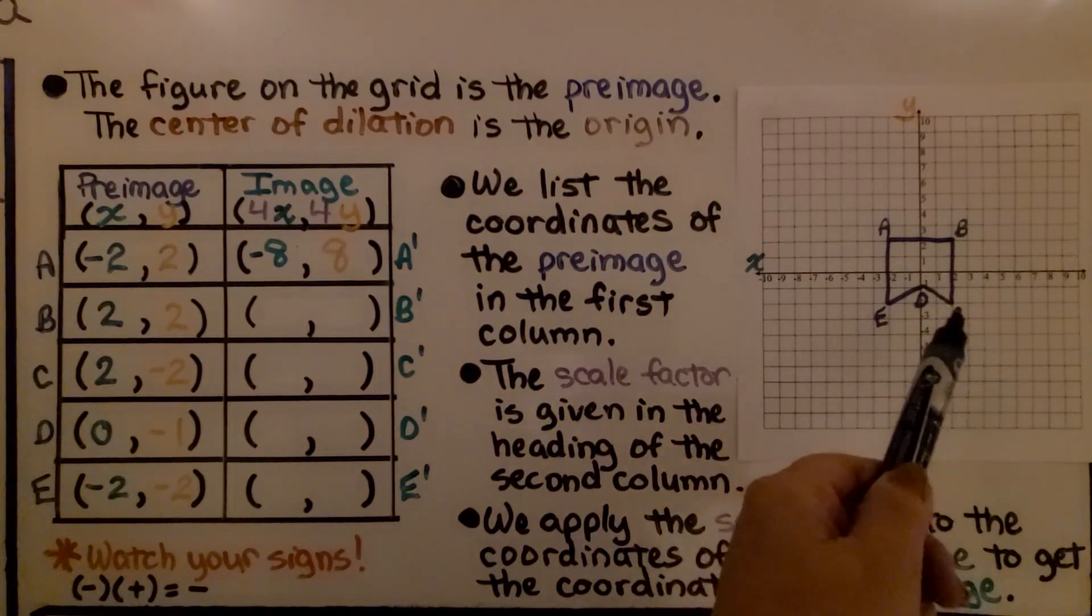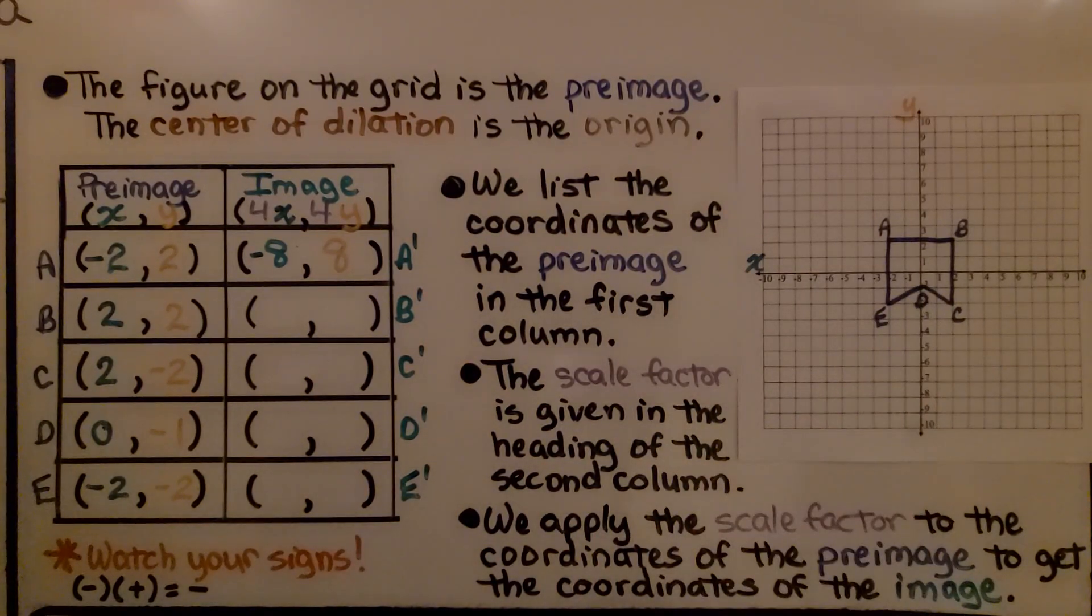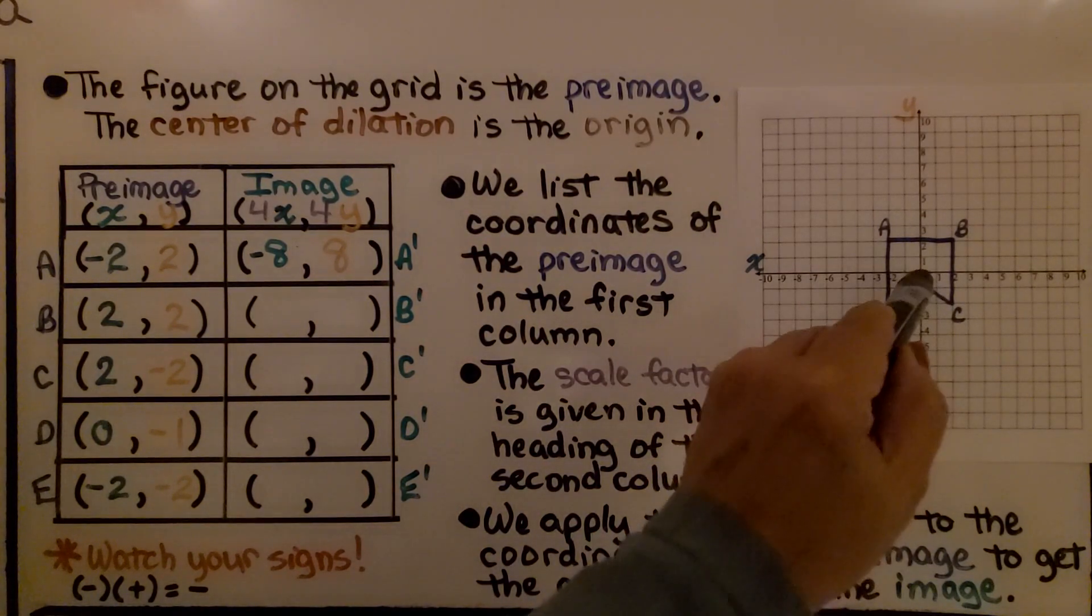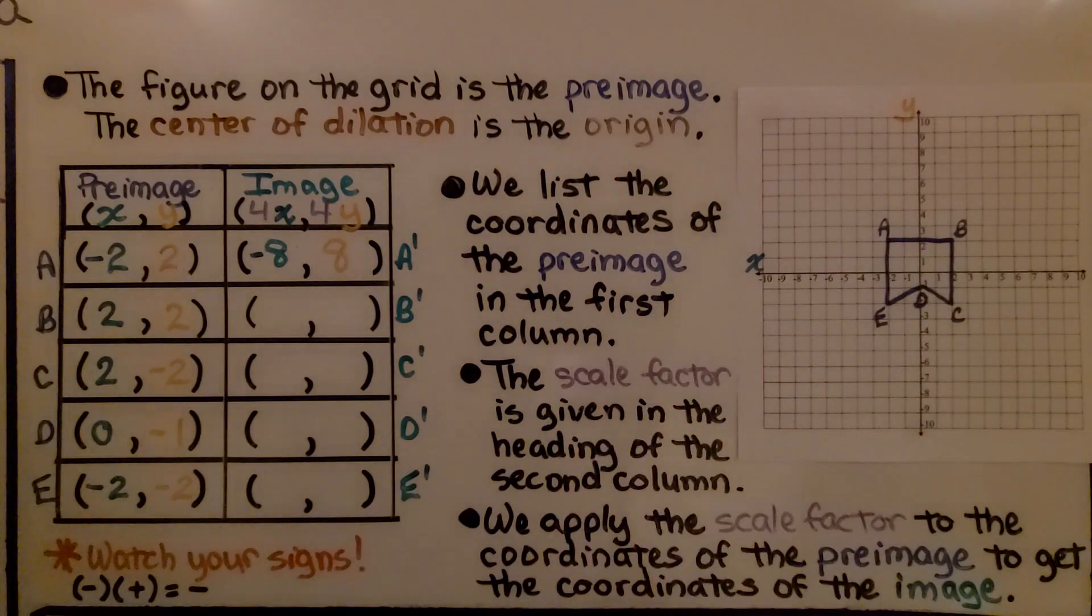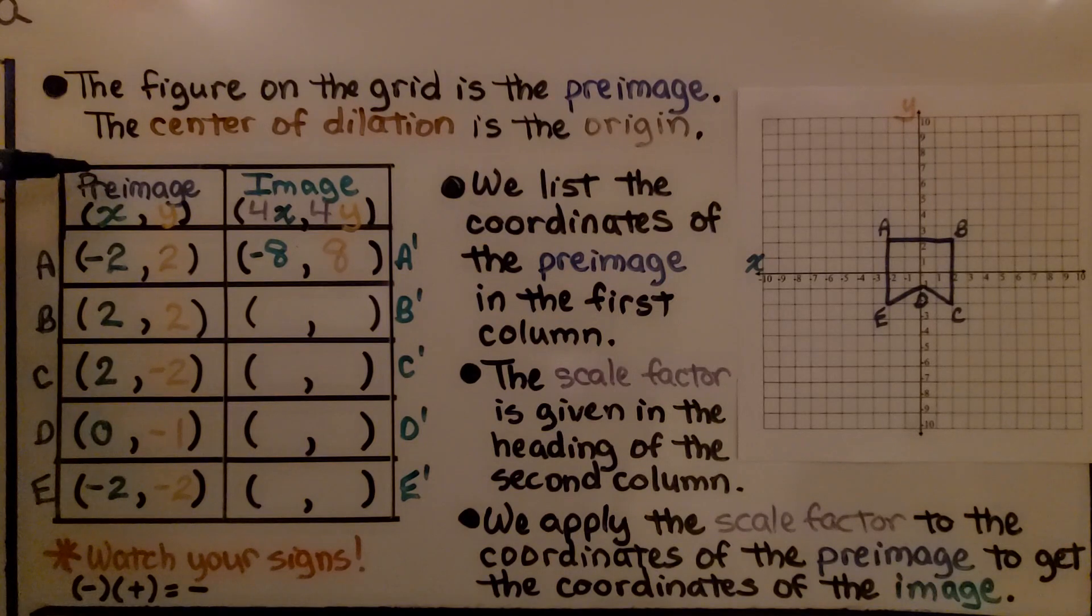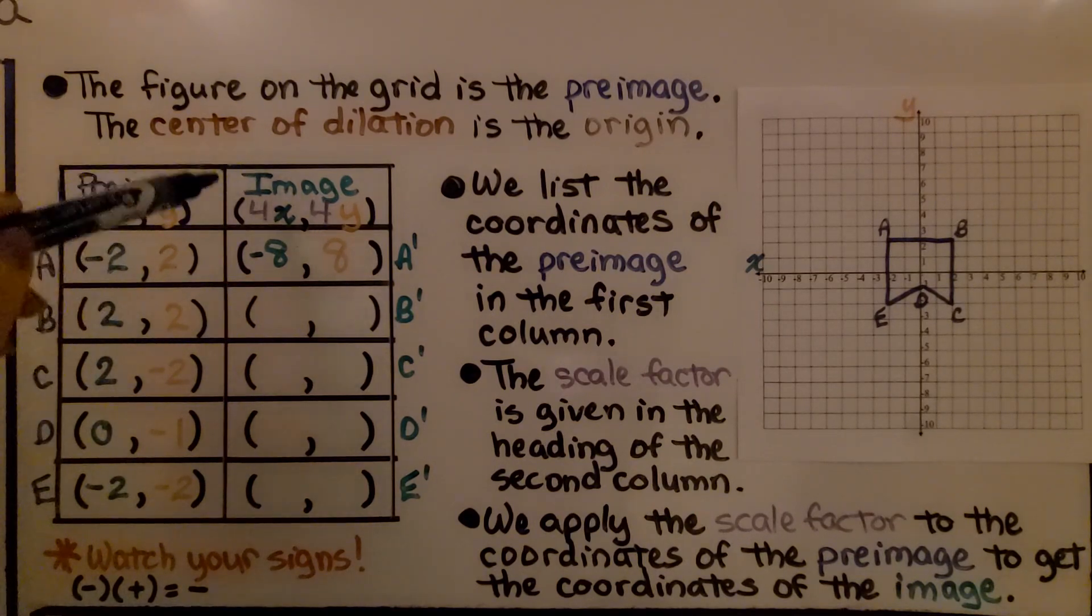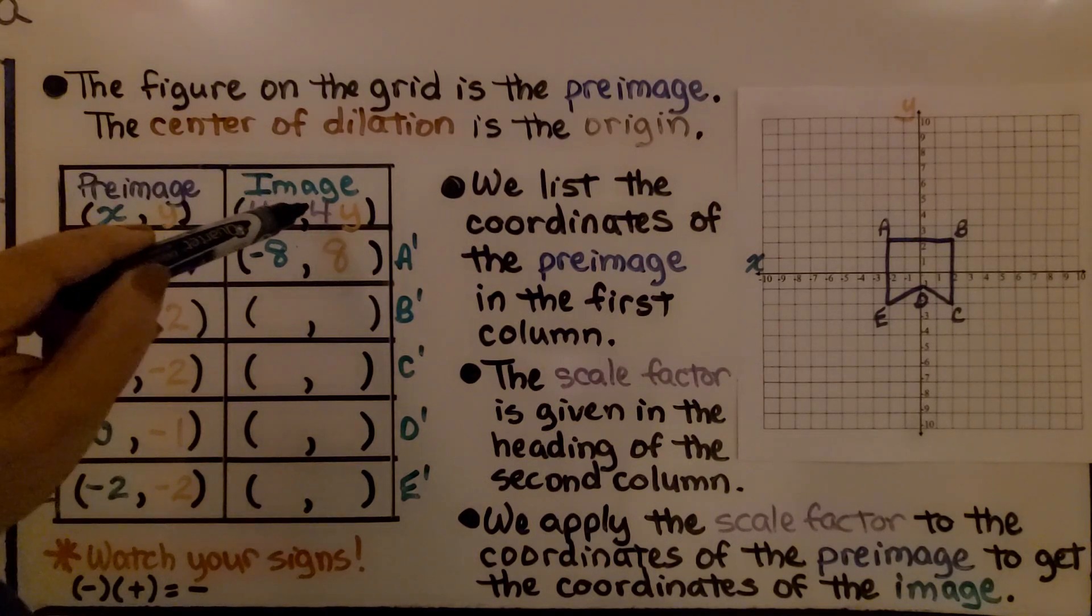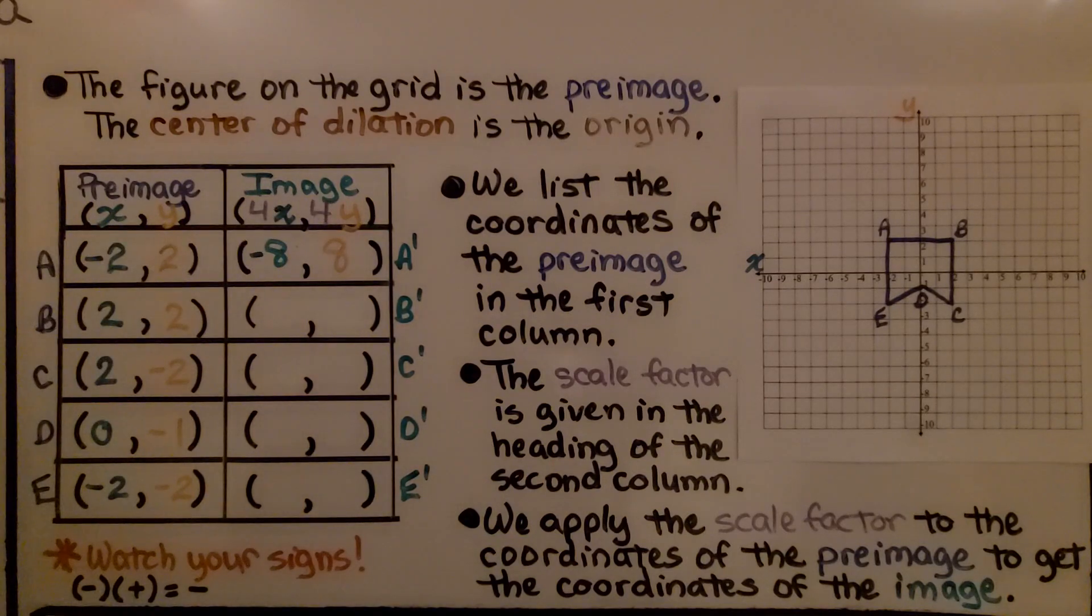Here we have a figure on the grid. This is the preimage, and the center of dilation is the origin right here at 0, 0. We've got a table and we have preimage, and that's going to be our x, y values at each of the vertices. And then we have our image and it says 4x and 4y. We list the coordinates of the preimage into the first column.